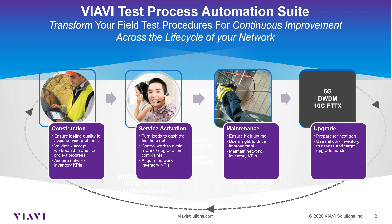Next we go into maintenance. We want to ensure high quality, high uptime, and we want to start doing continuous improvement and address the hot spots in our network where we have problems. We also want to maintain those KPIs and see what's going on in the network so that we can plan for the final phase, which is upgrade. We know we have 5G or DWDM or maybe 10G PON coming along, so we've got to target the areas that need upgrades to be ready to offer those next features.